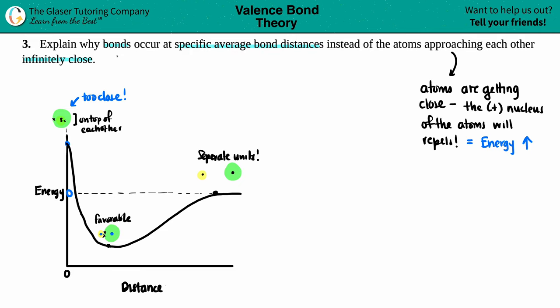So explain why the bonds occur at specific average bond distances instead of the atoms approaching each other infinitely close, because when they get close, those positive nuclei of the atoms will start to repel because they're both positive. Same charges repel each other, and that jacks the energy all the way up. So we need that specific average bond distance between the two nuclei.